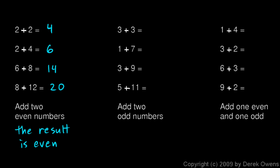Let's look at this next column. In all of these cases — 3 plus 3, 1 plus 7 — we're adding two odd numbers. 3 plus 3 is 6, 1 plus 7 is 8, 3 plus 9 is 12, and 5 plus 11 is 16. Again we get even numbers. Adding two odd numbers, the result is even, and these patterns hold every single time.